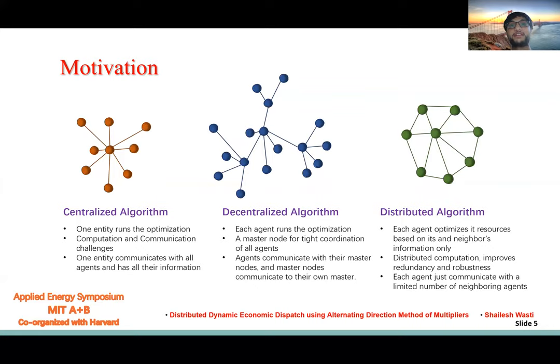In distributed, a master node is no longer needed. Each agent optimizes its resource based on its own and its directly connected neighbors, so the computation is now divided among agents and so does the communication.